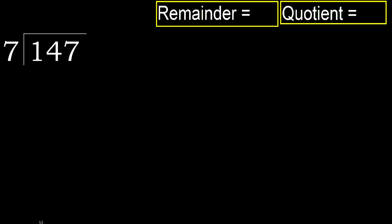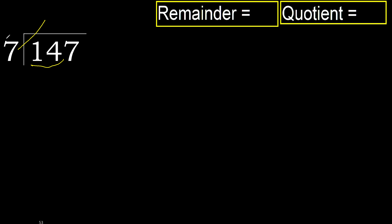147 divided by 7. 1 is less, therefore next. 14 is not less, therefore with 14. 7 multiplied by which number is nearest to 14, but not greater?